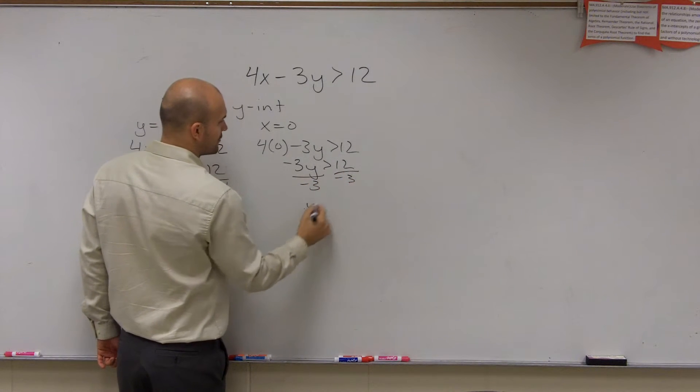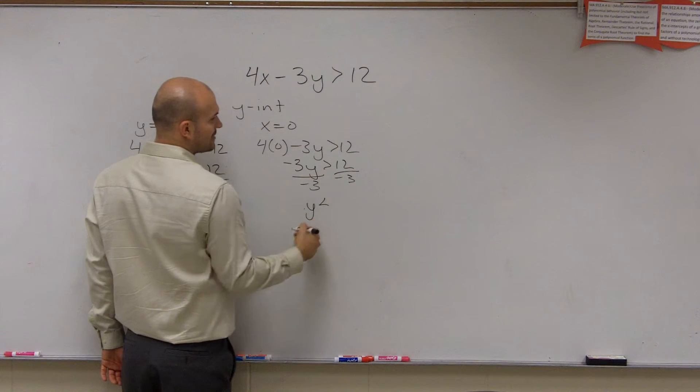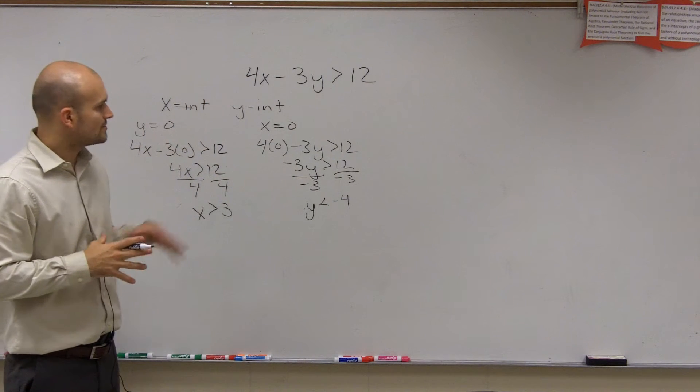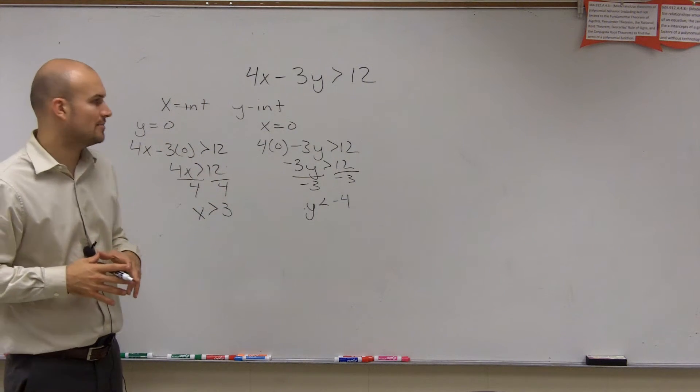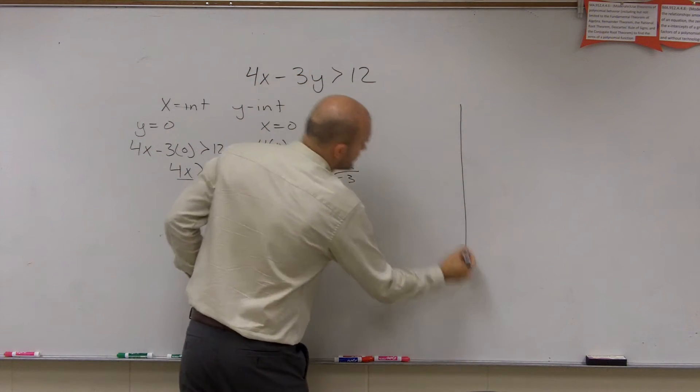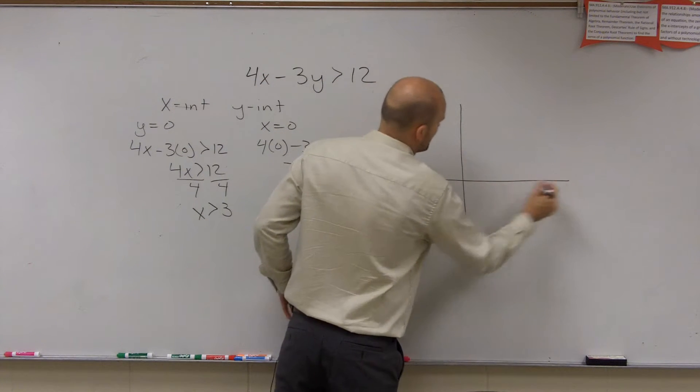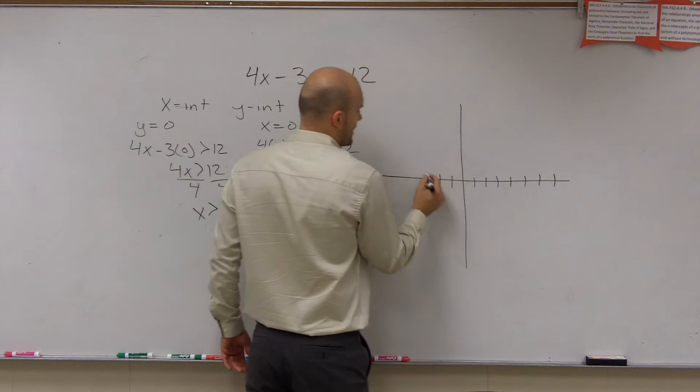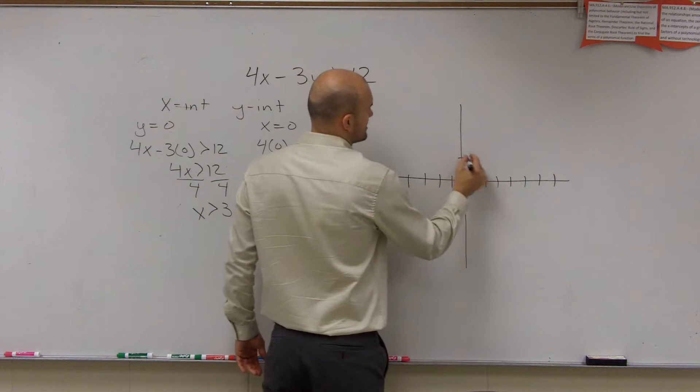Remember, dividing by a negative number, you're now going to switch. Y is now less than negative 4. All right? So to graph this, what I like to do is these are both my x and my y-intercepts. Now, when graphing, I always want to make sure that I use a test point just so I can make sure that everything I did was correct and it's going to work.